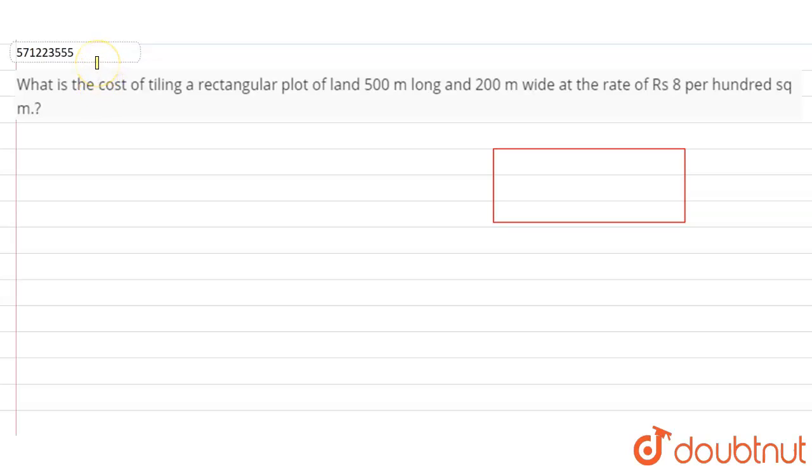Hi students, the question is: what is the cost of tiling a rectangular plot of land 500 meters long, 200 meters wide at the rate of rupees 8 per 100 square meters?